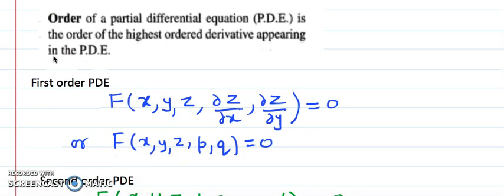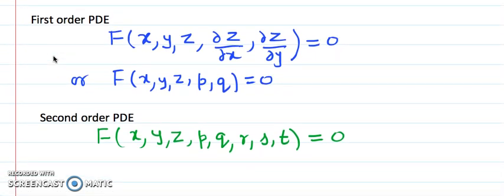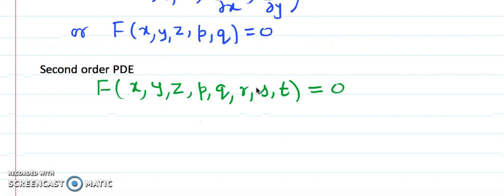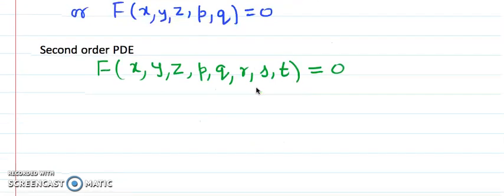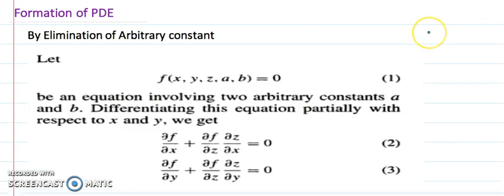The order of a partial differential equation is the highest order derivative appearing in it. A first order PDE involves only first order derivatives — it can be written symbolically as an expression involving X, Y, Z, and first order terms. If the second order is present, it is called a second order partial differential equation.